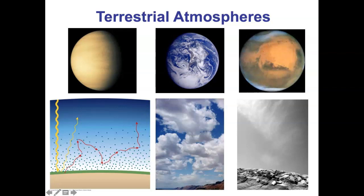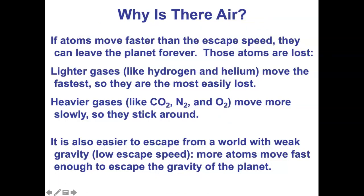We left off last time talking about the properties of the planets and why planets have atmospheres. Now we're going to zoom in and look specifically at the terrestrial planets. To recap from last time: why do planets have atmospheres at all? The answer is because either the planet's gravity is strong enough to hold on to gas so molecules don't reach escape speed, or the planet is cold enough that molecules can't reach escape speed. What atmospheres a planet can have are based on both gravity and temperature.